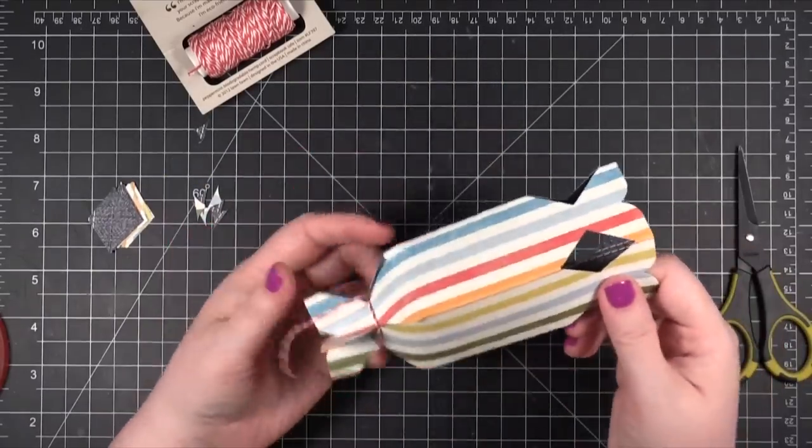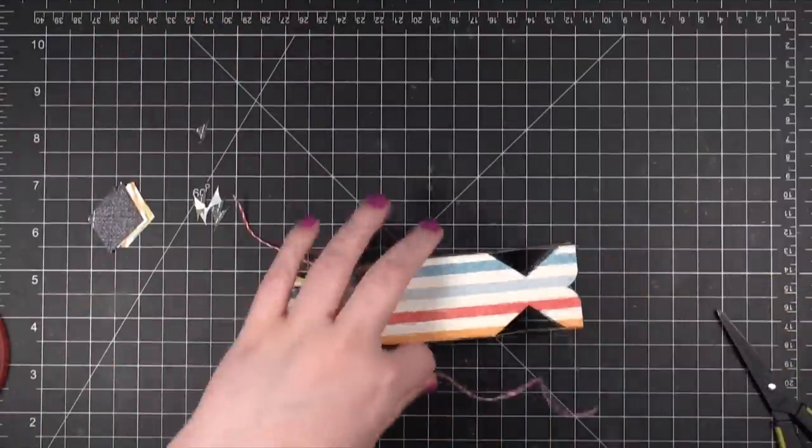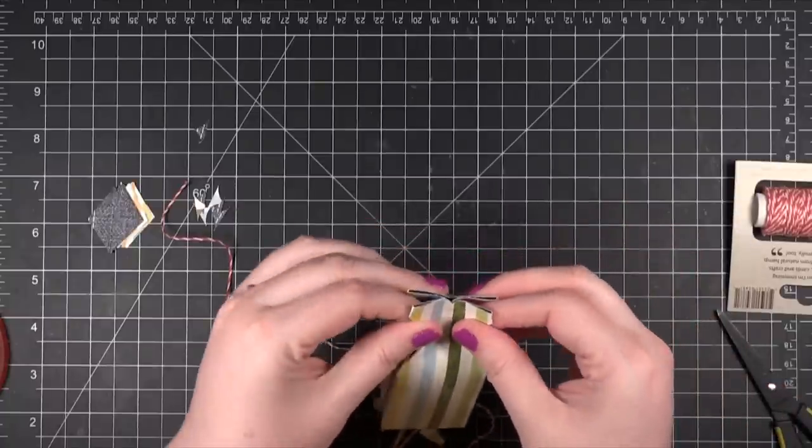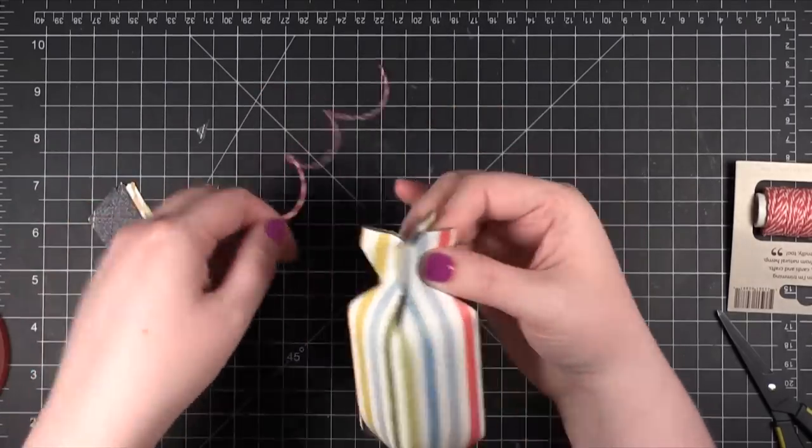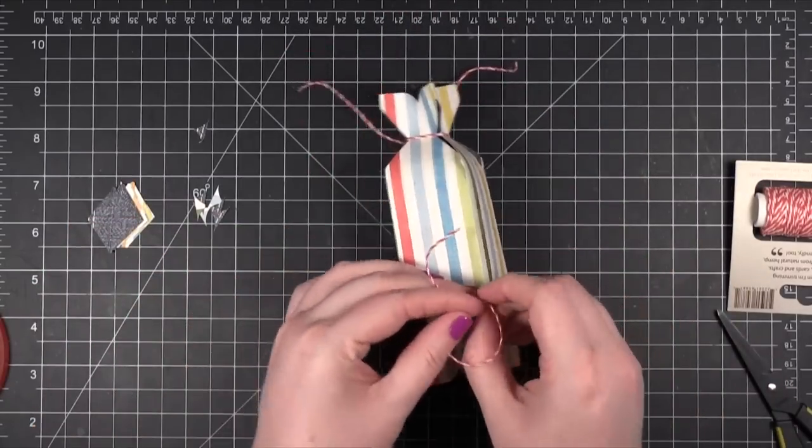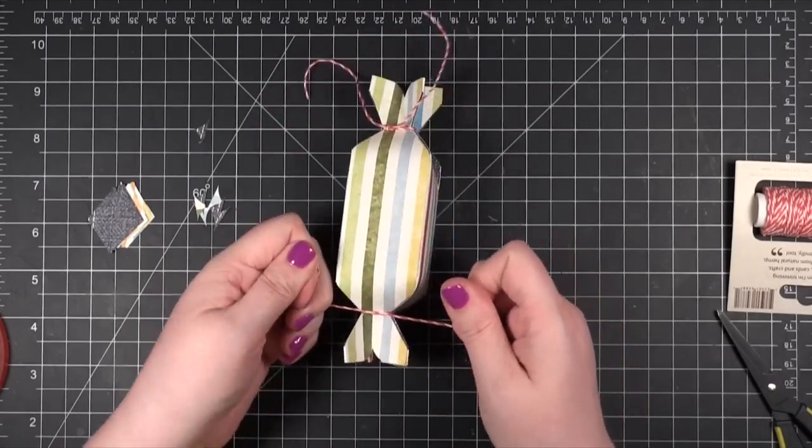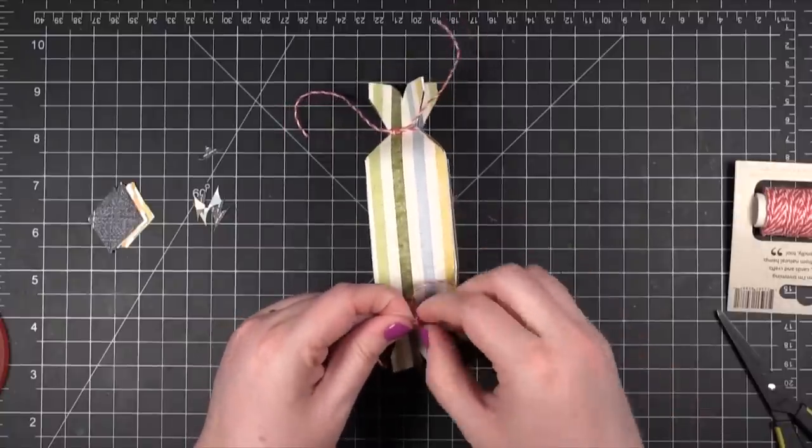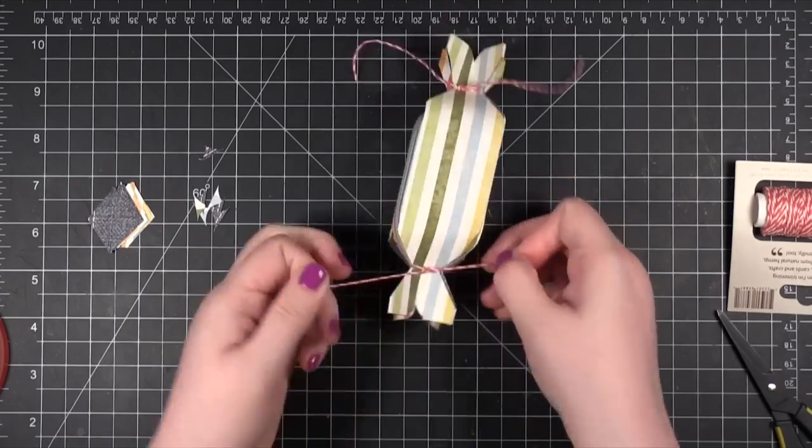So this is when you would put your treats or anything else that you want inside. So let's pretend I put some treats in there. I'm going to cut another piece of string. And I'm going to do the same thing on this end. Just pinching in those corners. So it starts to close up the box. And I'll tie the string on this end. Get that nice and tight. And then tighten up that knot.